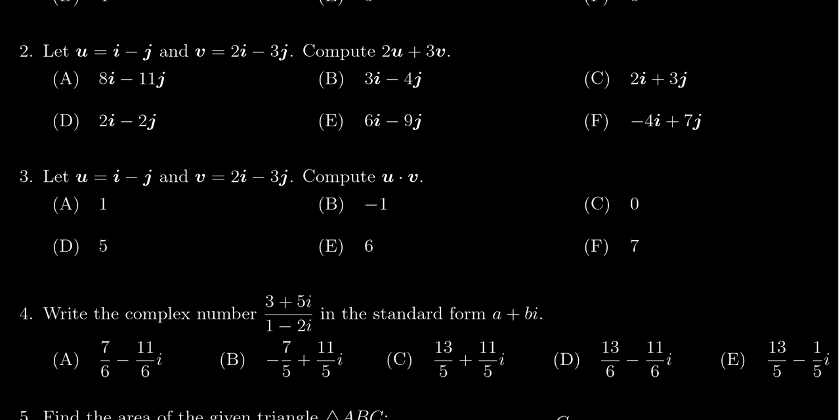We're given two vectors, u equals i minus j, and v equals 2i minus 3j, where i and j are the unit directional vectors. i goes in the x direction one unit, j goes in the y direction, vertical direction, one unit.